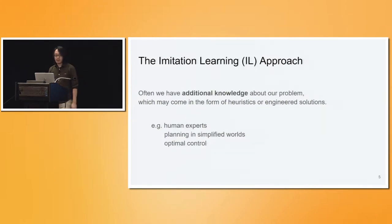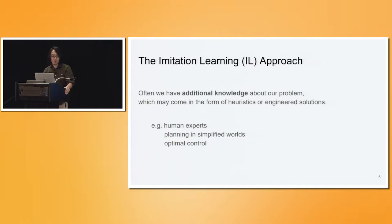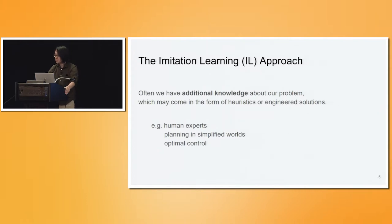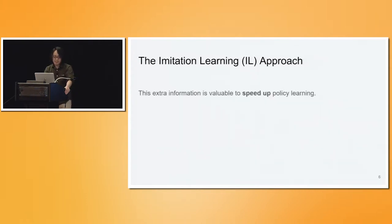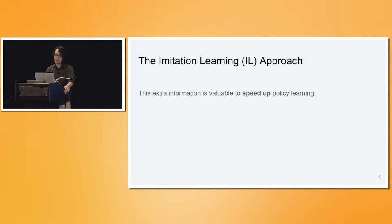But if we think about the problems we want to solve in practice, those problems are not completely unknown to us. We have some extra additional knowledge. For example, we are human — we know how to bring coffee ourselves, so we have human demonstrations. We also have past research on simplified versions of these problems: planning in symbolic worlds, simplified settings, and a bunch of research in optimal control. It turns out this extra information is actually quite valuable for speeding up policy learning.